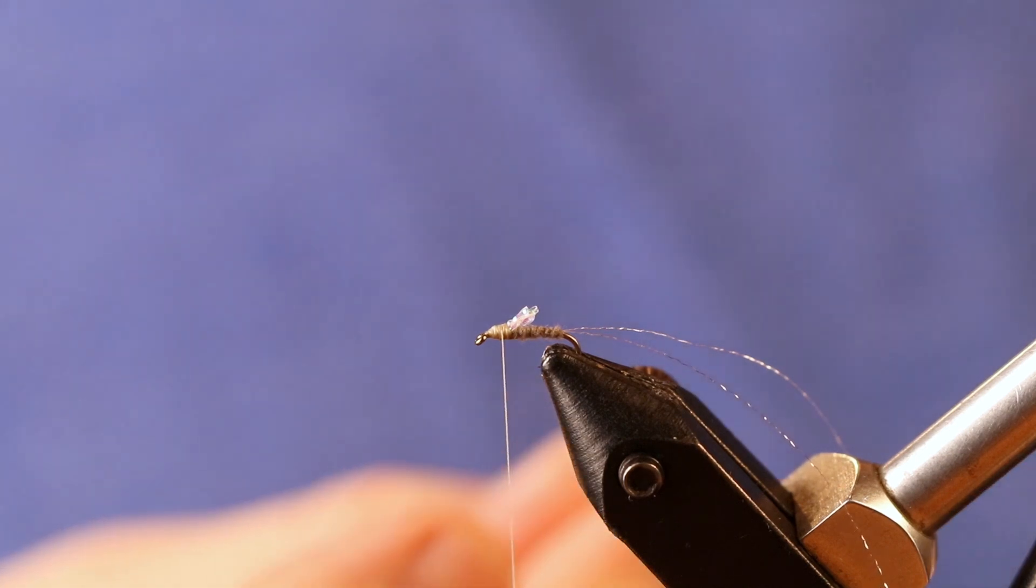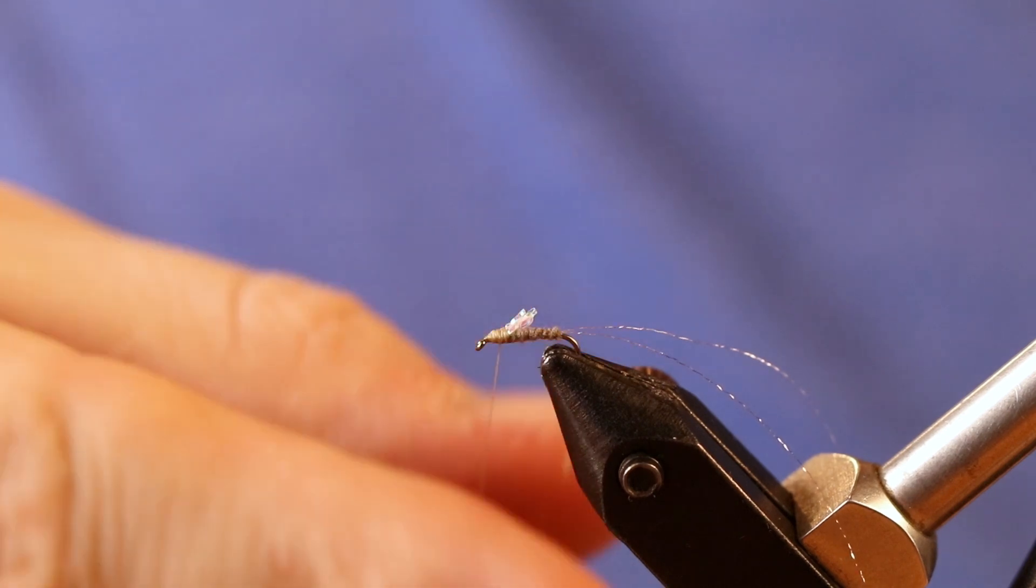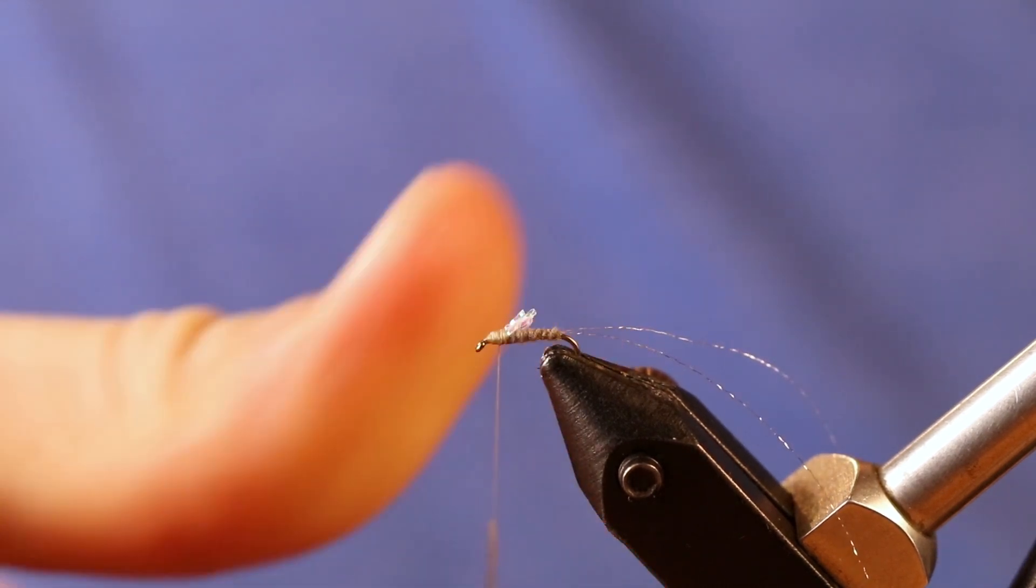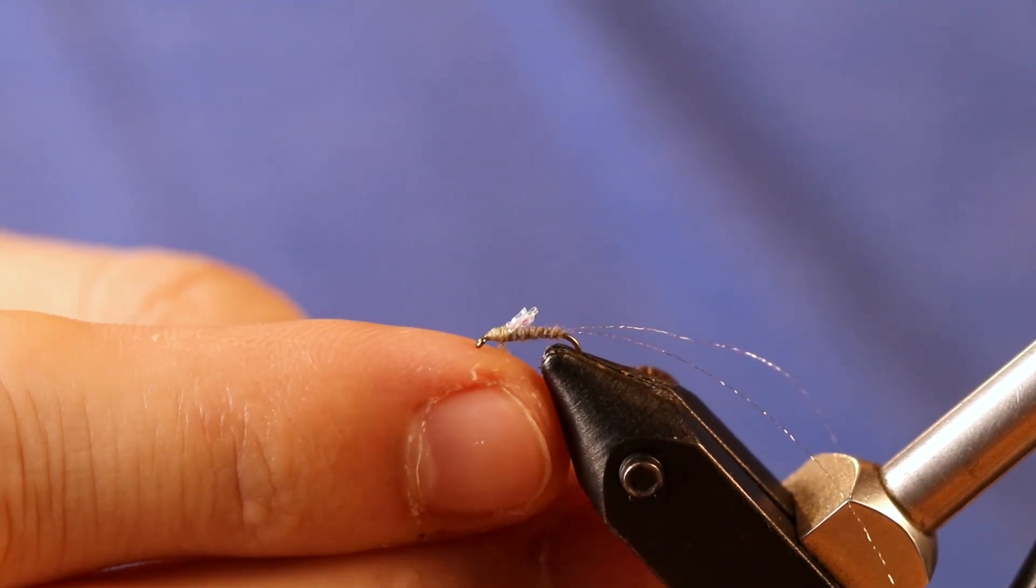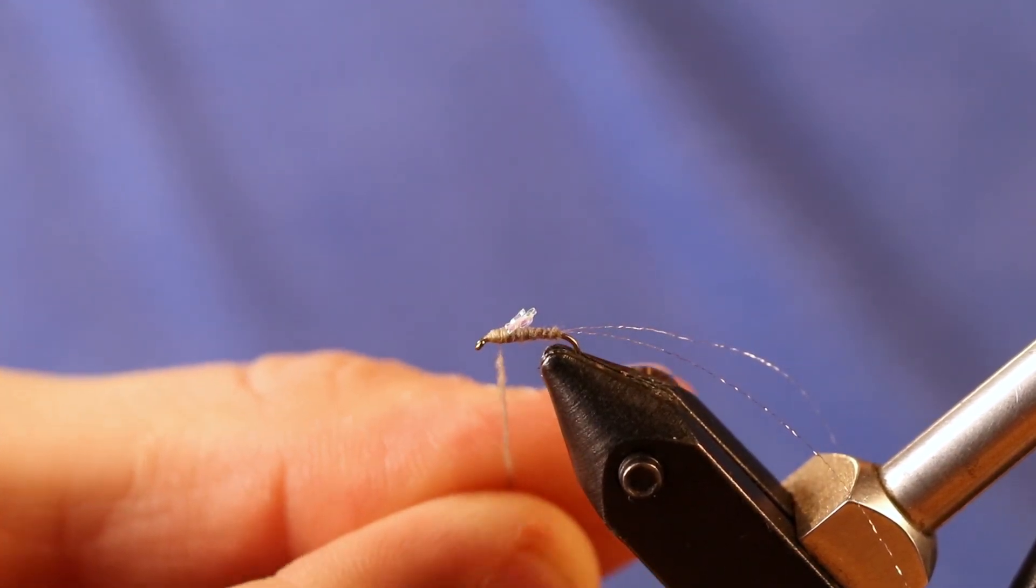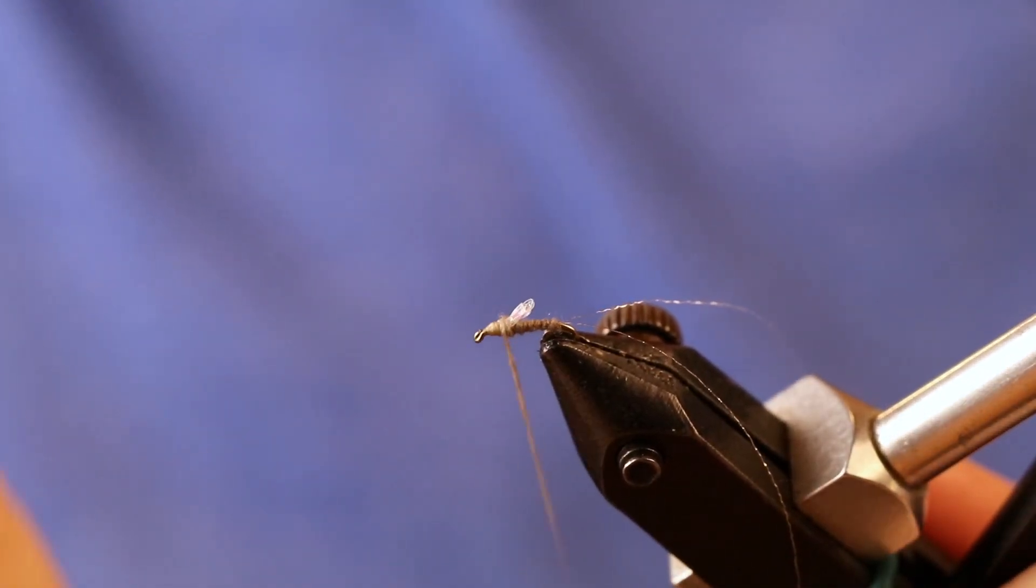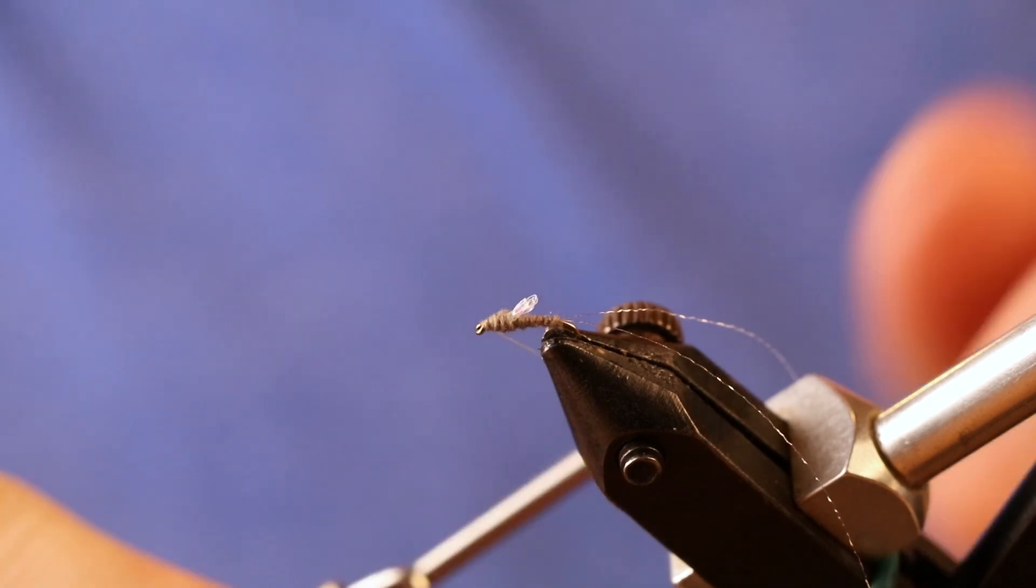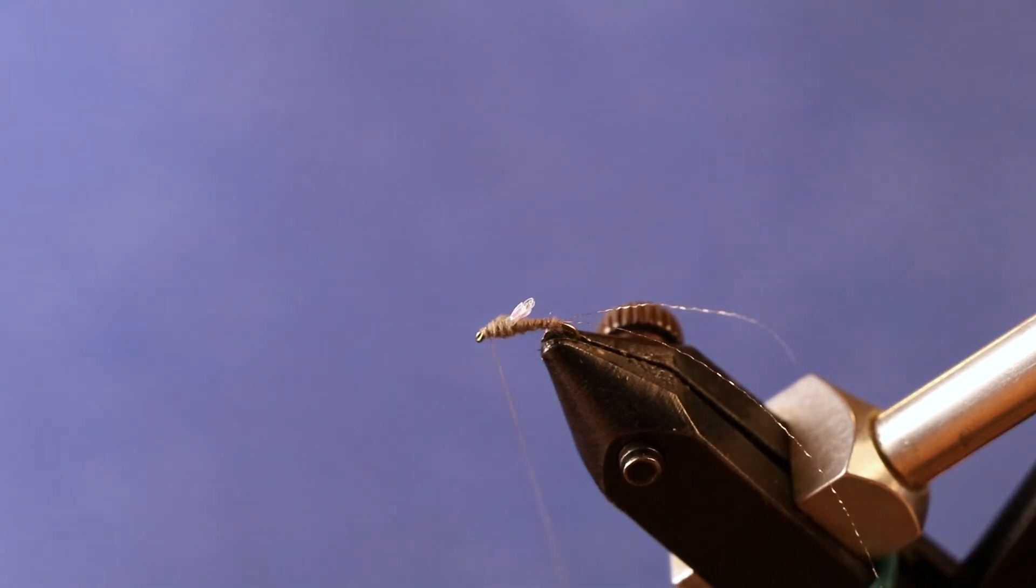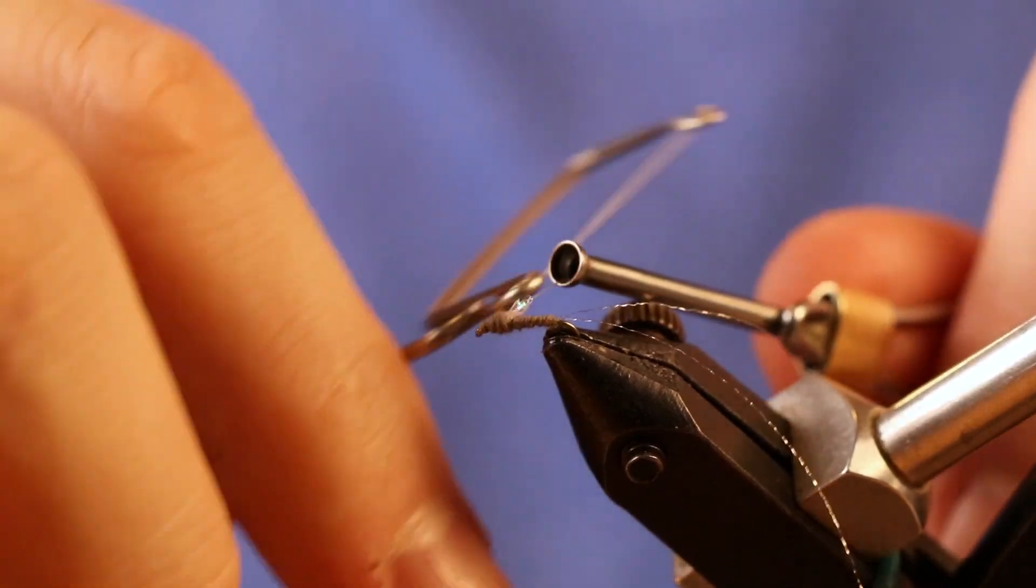Get a little bit more of this dubbing, making another noodle on the front, another tight noodle. Move that right up close. Now we can dub this front little thorax to a nice little taper. This can be fatter than the back of the body. And you're ready to tie this off.